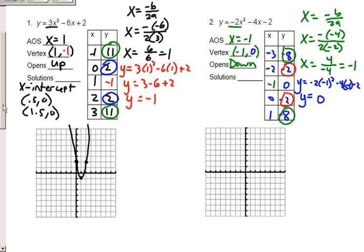Now, all we do is plot points. So, negative 3, negative 8, negative 2, negative 2, negative 1, 0, 0, negative 2, and 1, negative 8.